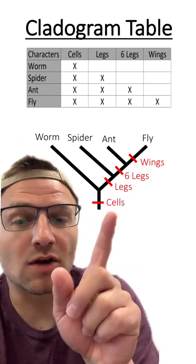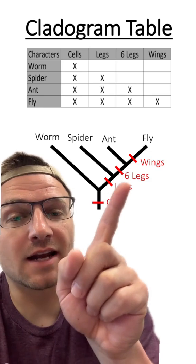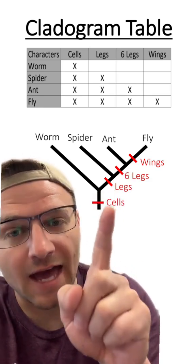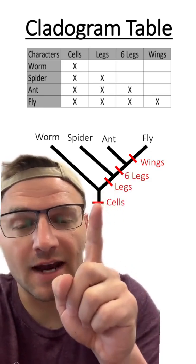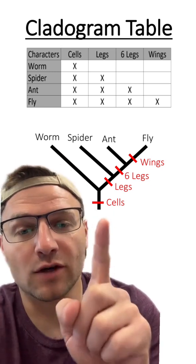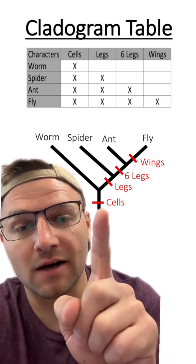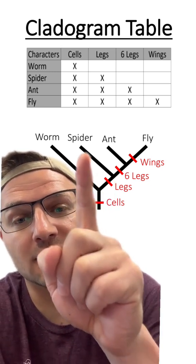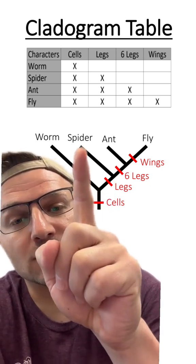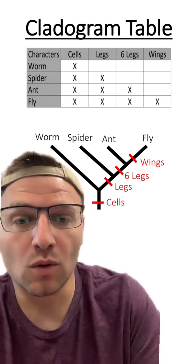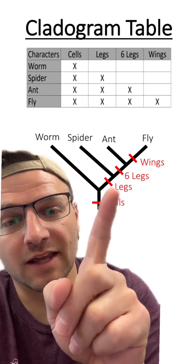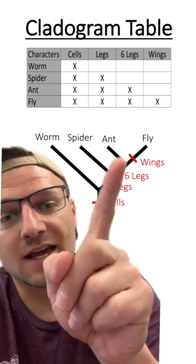Remember that these adaptations on the right-hand side are showing that the species has or possesses that adaptation. For example, the spider has cells and legs, but not six legs, so it goes here. Or in the case of ants, they have cells, legs, and six legs, and they go here.